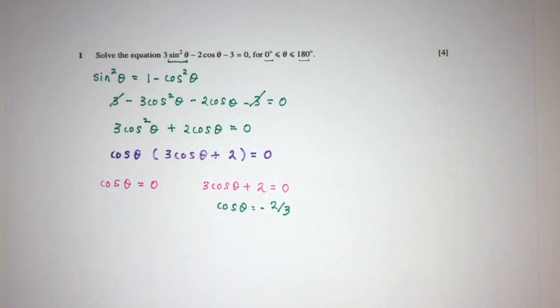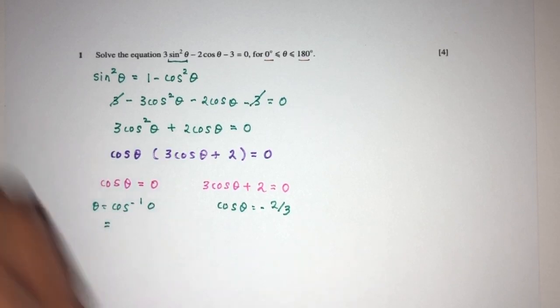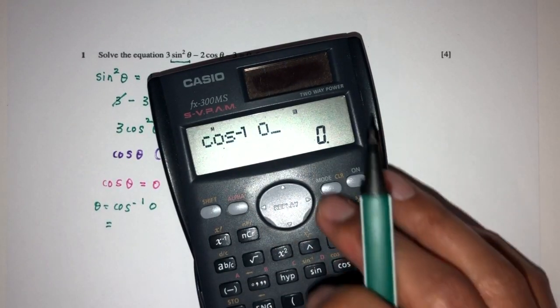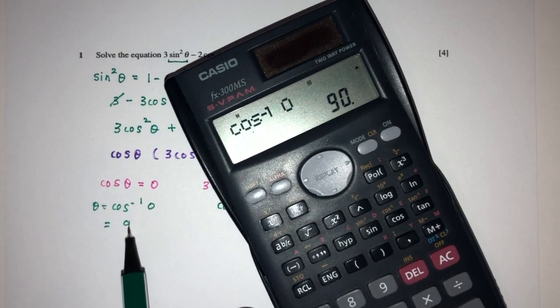Now let's look at one by one. So here we have cos theta equal to 0, so let's find theta. Theta will be cos inverse of 0, that should be what? Let's find out. Cos inverse of 0, here we have to use degrees, that will be 90 degrees.